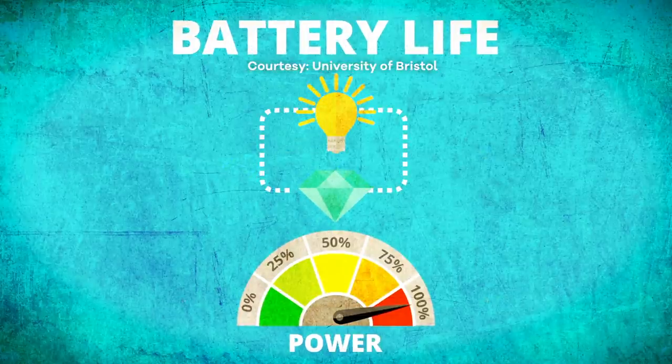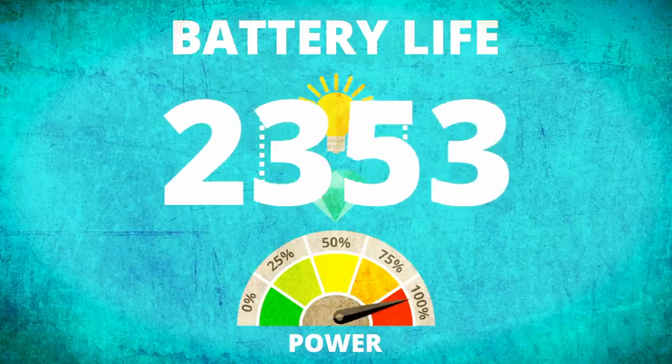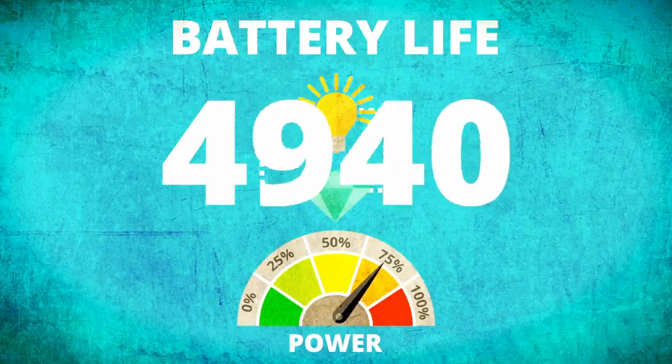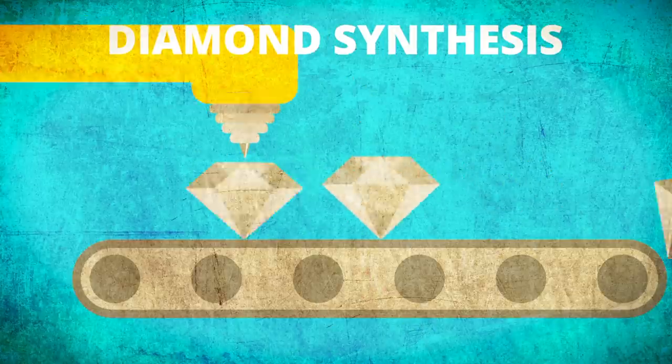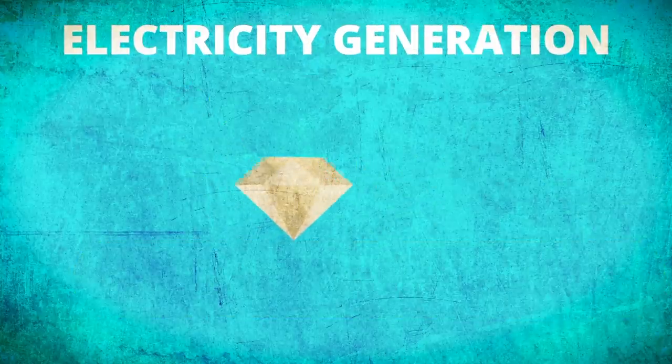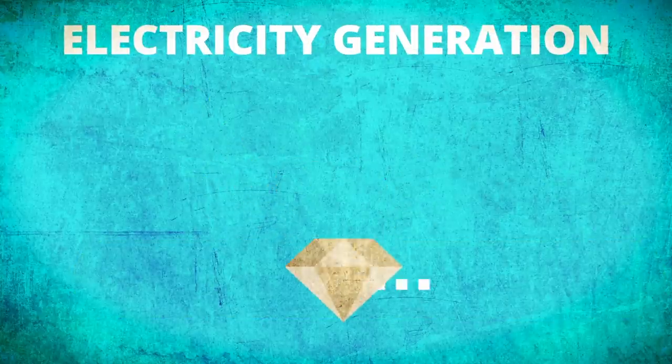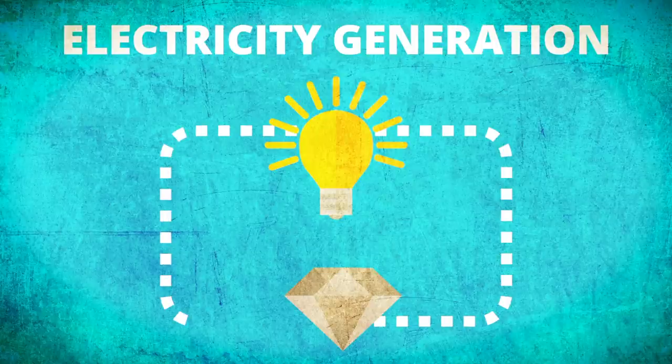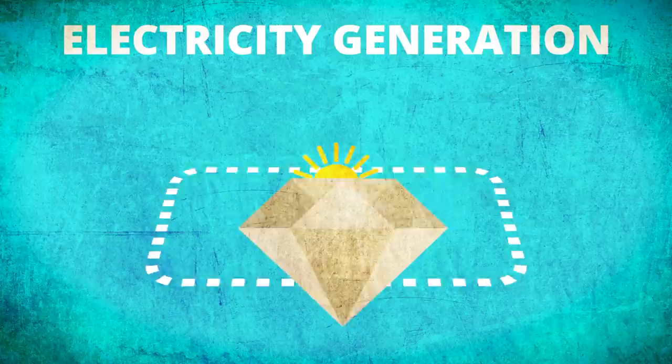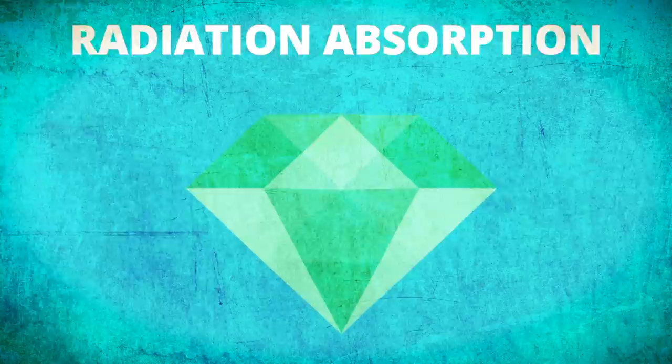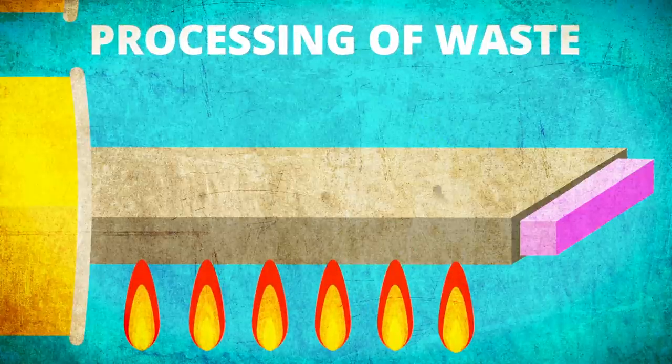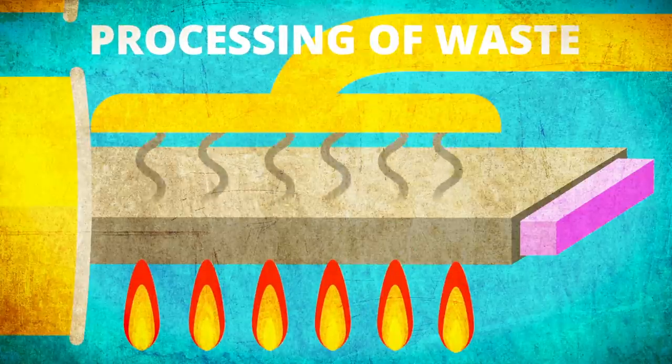Lengthening the lifespan of batteries is obviously one of the main aims of researchers worldwide, which could be why a team at Bristol University say they've designed a new type that can last thousands of years. They've created a man-made diamond that, when placed inside a radioactive field, generates a small amount of current. Whilst the radiation it gives off is less than a banana, there are no moving parts involved, no emissions generated and no maintenance required, just direct electricity generation.